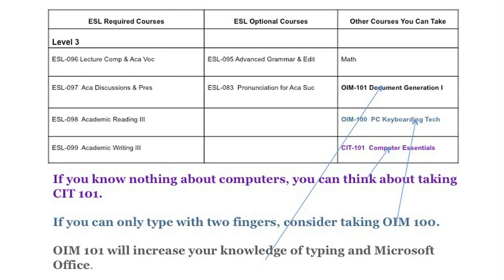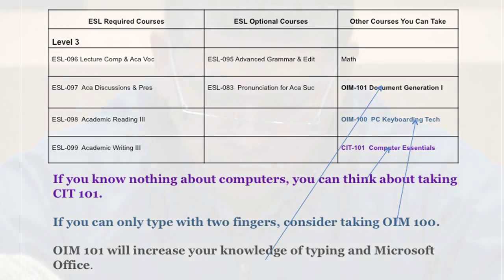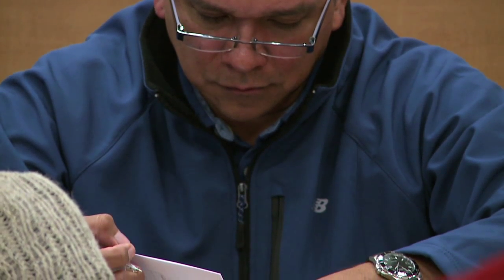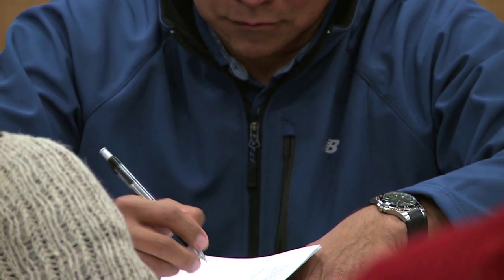CIT 101 is a good course if you don't know anything about computers. OIM 100 is good if you only type with two fingers. And OIM 101 is good for typing in Microsoft. So those are the three courses you can think about taking — you can take them in level two and three, but not level one.